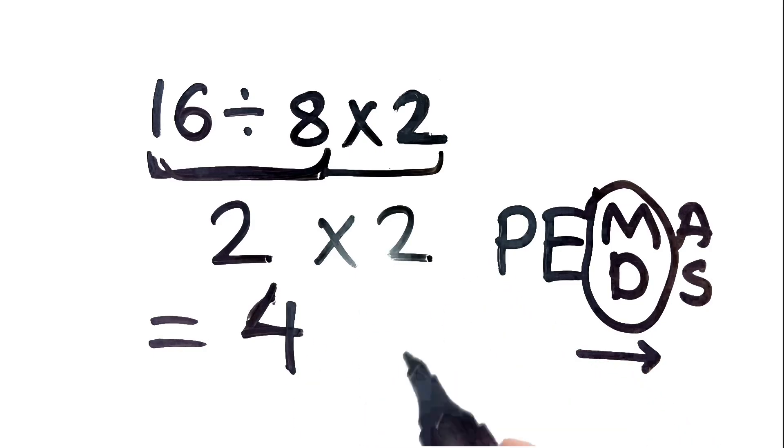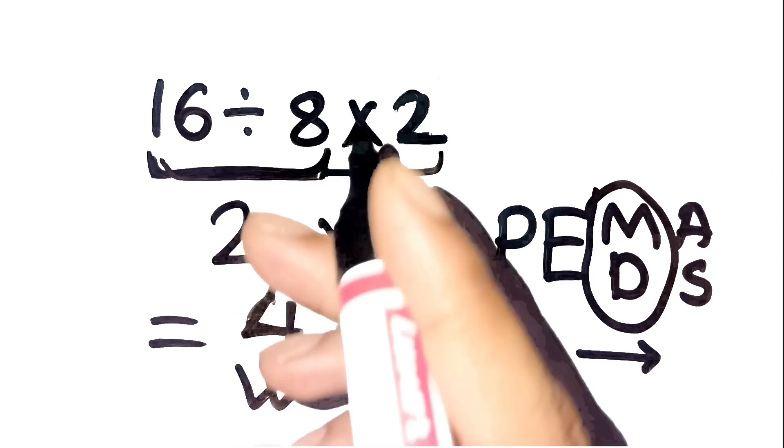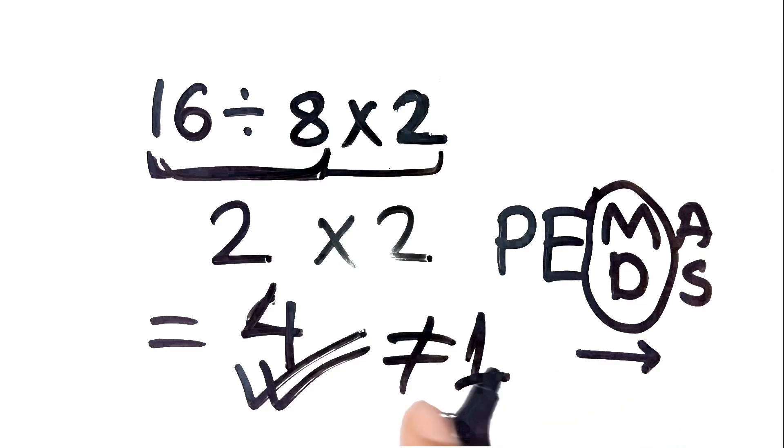That's it. That's all the work. So the correct answer is 4, not 1. Yes, 4, not 1. That little mistake happens to everyone because we tend to rush multiplication without thinking about the left to right rule.